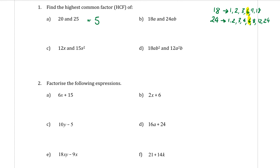Hopefully you'll get to the point where you can just look at them and know it's going to be 6. So 6 is the highest number factor, but remember the letters — if the letter is in both of them, then it's a factor as well. They both have an A, so 6A is the highest common factor.